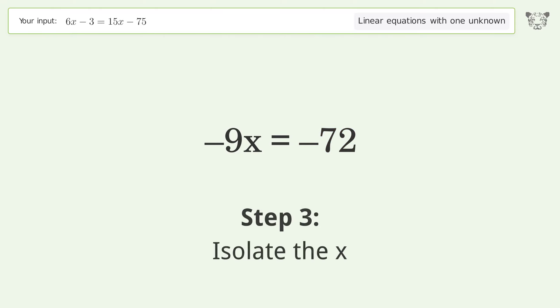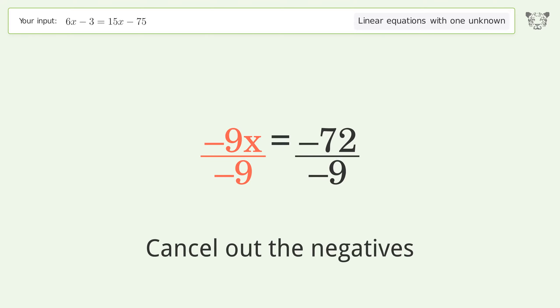Isolate the x. Divide both sides by negative 9. Cancel out the negatives. Simplify the fraction. Cancel out the negatives.